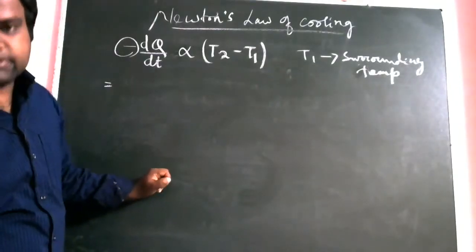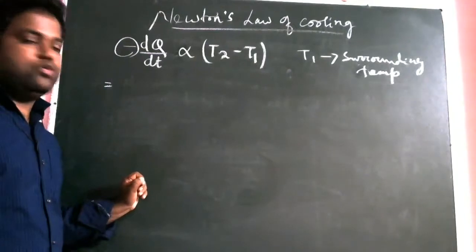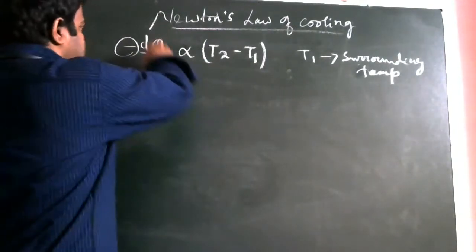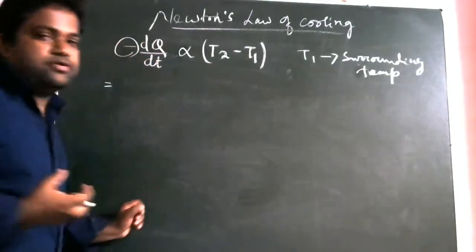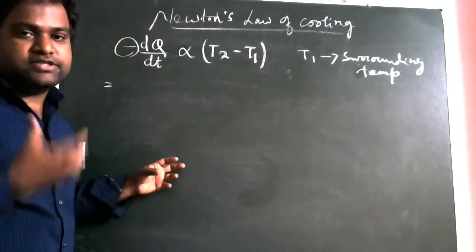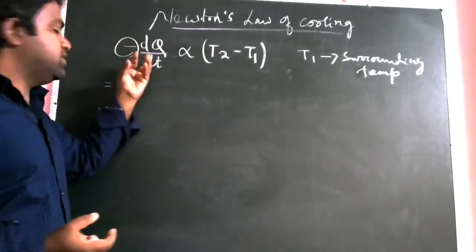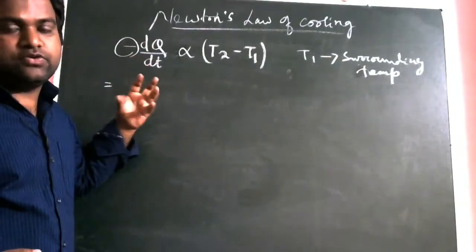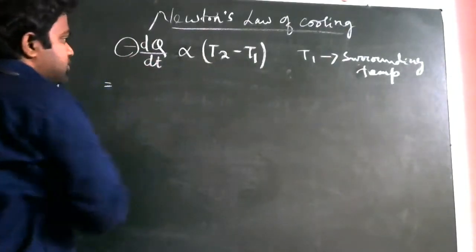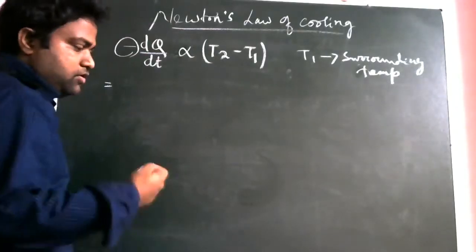So if there is some temperature difference, then more is the temperature difference, the faster will be the rate. This dQ upon dt tells you how fast the heat is dissipated, or how fast the cooling is taking place. So more is the temperature difference, more will be the rate of heat loss.